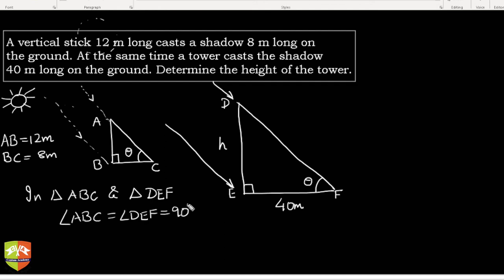And angle ACB is equal to angle DFE. Why is that? Inclination to the sun—both are inclination of the sun, or angle of elevation of the sun, whichever way you want to say. Let me write it.